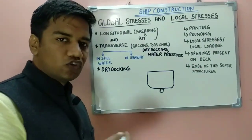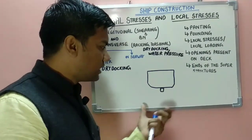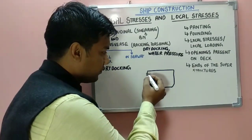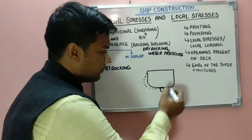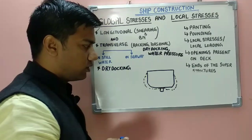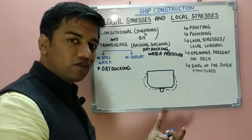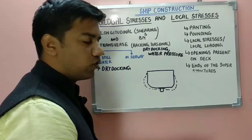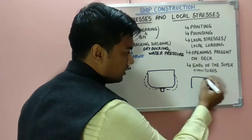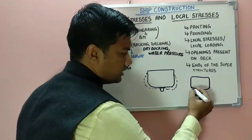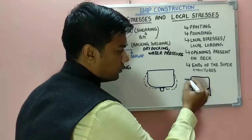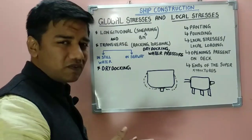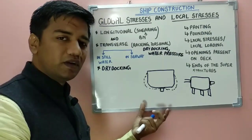Under dry docking, global stresses develop as follows: the ship lies only on keel blocks, which tends to distort the side shell plating. These stresses develop along the length of the ship and are global stresses. Modern dry dock procedures now support the ship from all sides. Dry dock stresses typically occur for a specific initial duration of time.